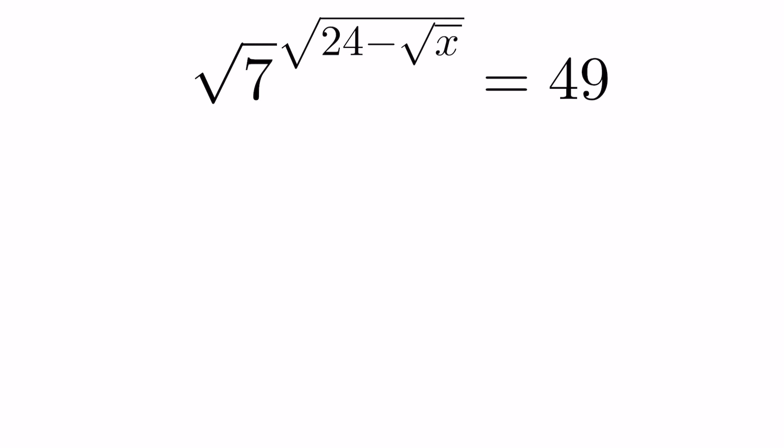Whenever you're solving exponential equations, you want to get a common base on both sides. You see the 7 here and the 49. I can rewrite 49 as 7 squared. Let's go ahead and do that first.